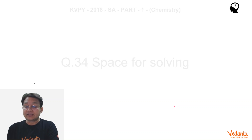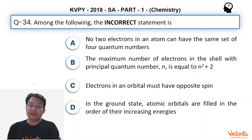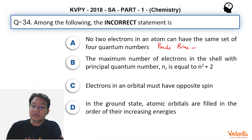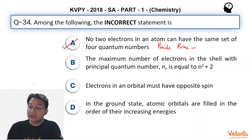Let's find out the incorrect statement. No two electrons in an atom can have all the same set of four quantum numbers — that's the Pauli exclusion principle, so it could not be incorrect. Option A is definitely correct. The maximum number of electrons in the shell with principal quantum number n is equal to n² + 2 —